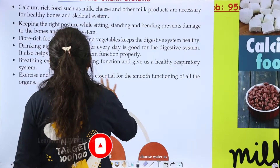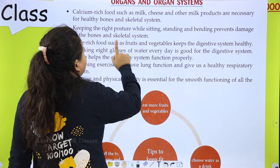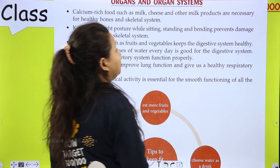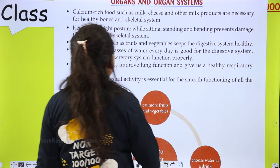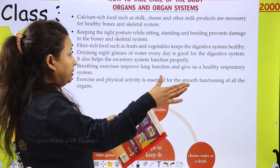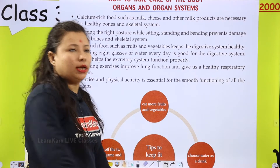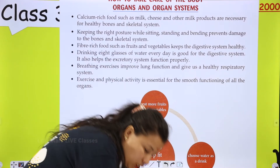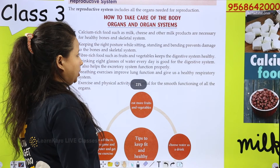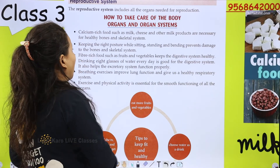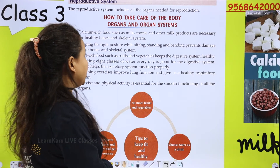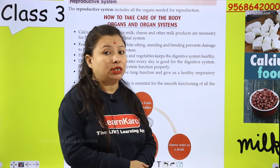Next is: keeping the right posture while sitting, standing, and bending prevents damage to the bones and skeletal system. Agar aap dhang se baithe hain, khade hote hain, bend hote hain — toh aapko right posture mein ye sab karna chahiye. Usse aapki bones damage hone se bach jayengi aur aapka skeletal system bhi theek rahega.